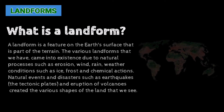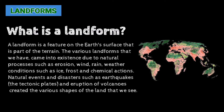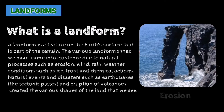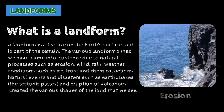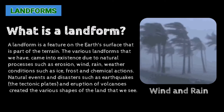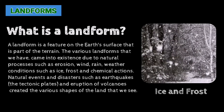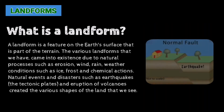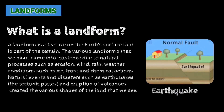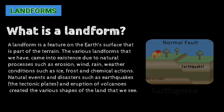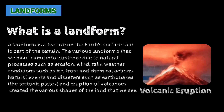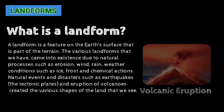What is a landform? A landform is a feature on the Earth's surface that is part of the terrain. The various landforms came into existence due to natural processes such as erosion, wind, rain, weather conditions such as ice, frost, and chemical actions, and natural events and disasters such as earthquakes, tectonic plate movement, and volcanic eruptions — creating the various shapes of land that we see.